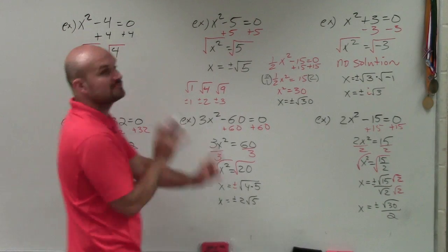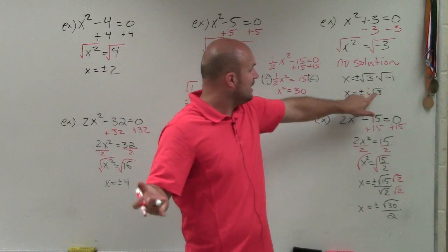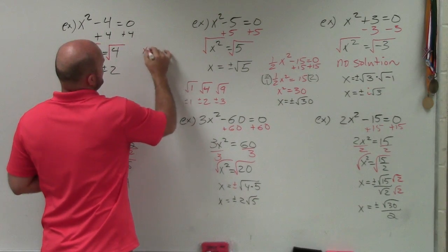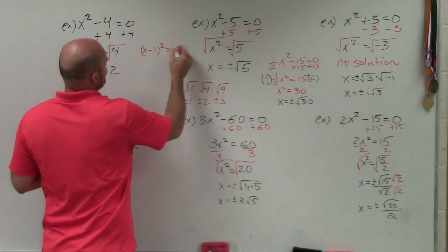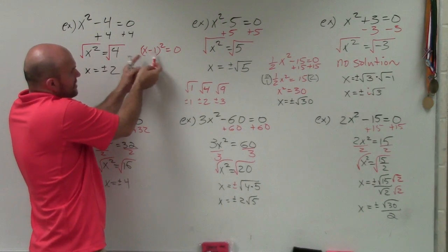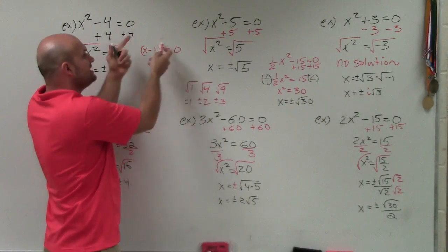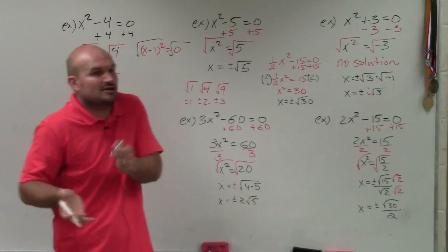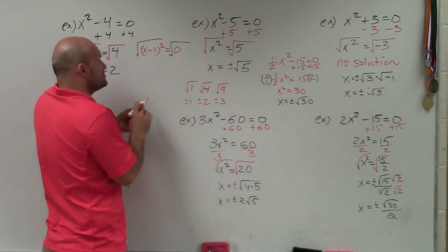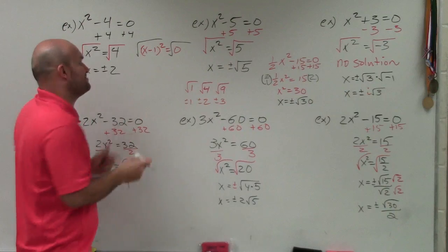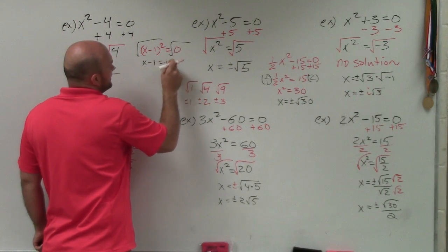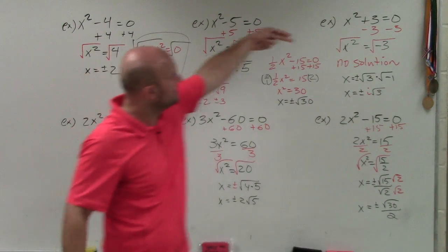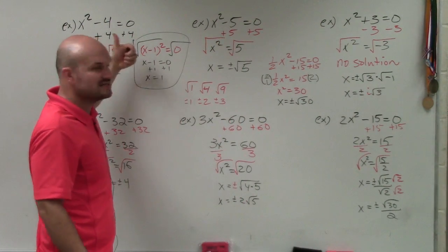We've talked about two solutions as plus or minus, and we've talked about complex or imaginary solutions when we have the square root of a negative number. Where does it come into having just one solution? That could be the case of something like x minus 1 squared equals 0. Here, the adding and subtracting to the variable is inside the parentheses, so to get inside we undo the square root first. The square root of 0 is just 0, and 0 is not positive or negative, so there is no plus or minus. We're left with x minus 1 equals 0, and adding 1 gives x equals 1 — one solution. This shows how we can get one solution, no solutions, or two solutions.